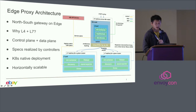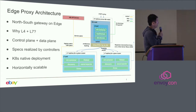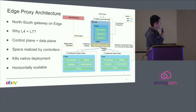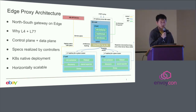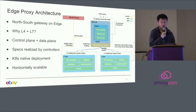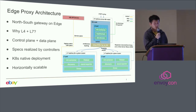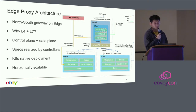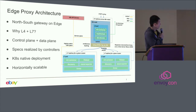Our architecture follows the same design pattern for both L4 and L7 — both have a control plane and a data plane. For L4, we use IPVS as our data plane and have a homegrown project called the ELB Director for the control plane. For L7, we use Envoy as our data plane and Ingress Controller as our control plane. Everything is spec-driven and model-driven. To operate a cluster, we create specs through the Kubernetes API server, then our L4 and L7 translate those specs into configs accordingly. Since it's a Kubernetes-native deployment, everything runs in pods and we can easily horizontally scale either L4 or L7.